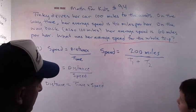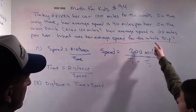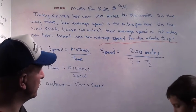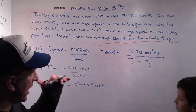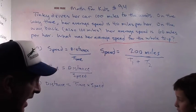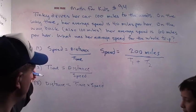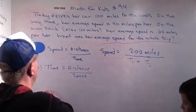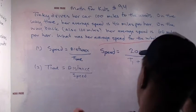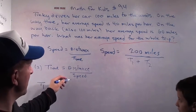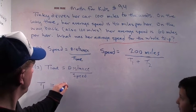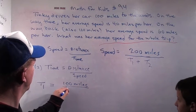How are we going to figure out two different times? On the way there, Tinky's traveling 40 miles per hour. We go back to the beginning and we say, I have an equation for time: time equals distance over speed. So, time one for the first part of the trip is distance divided by speed. For the first part of the trip, what was the distance? It was 100 miles. And the speed was 40 miles per hour.